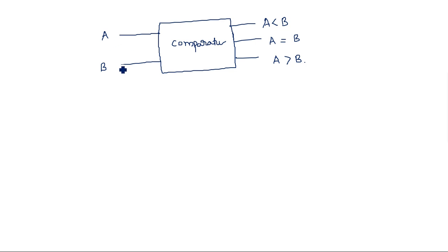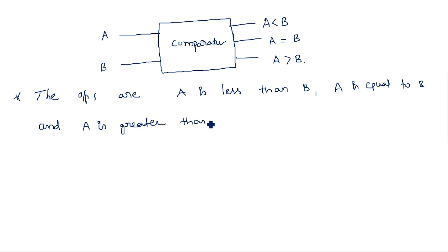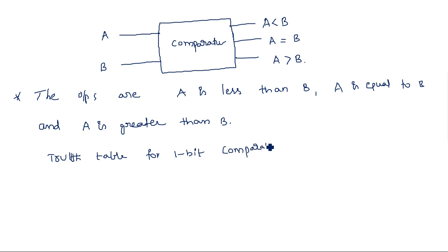The outputs are: A is less than B, A is equal to B, and A is greater than B. Now, suppose we are taking the truth table for a one-bit comparator. For a one-bit comparator, we have two bits A and B as inputs.